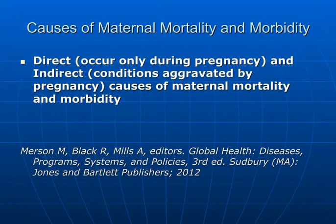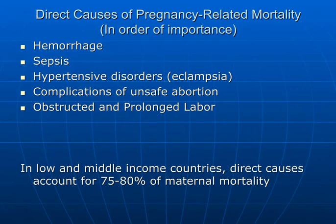What are some of the causes of maternal mortality and morbidity? There are direct causes which occur only during pregnancy and indirect causes, which are conditions aggravated by pregnancy. The direct causes of pregnancy-related mortality, in order of importance, are hemorrhage, sepsis, hypertensive disorders, complications of unsafe abortion, and obstructed and prolonged labor. In low- and middle-income countries, these direct causes account for 75–80% of maternal mortality.